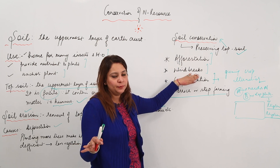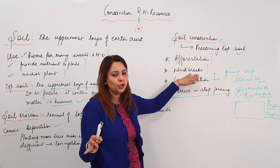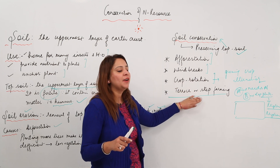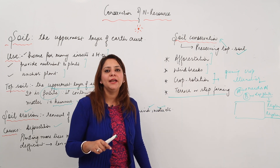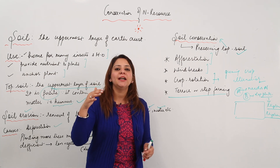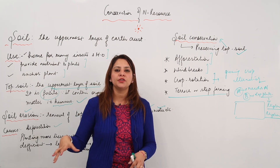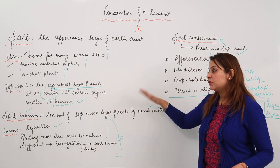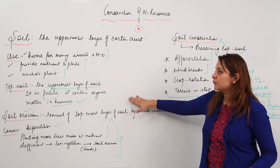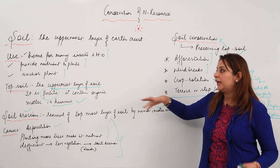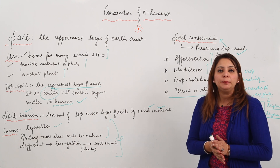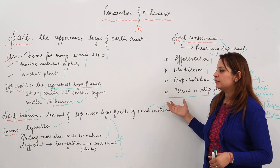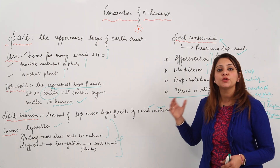So these are the four major practices to conserve soil: plant more trees, use windbreakers by planting shrubs after harvest, practice crop rotation to increase fertility, and practice terrace or step farming in hilly areas to form channels for water flow and prevent soil erosion. Soil is very important and directly or indirectly we all depend on it.